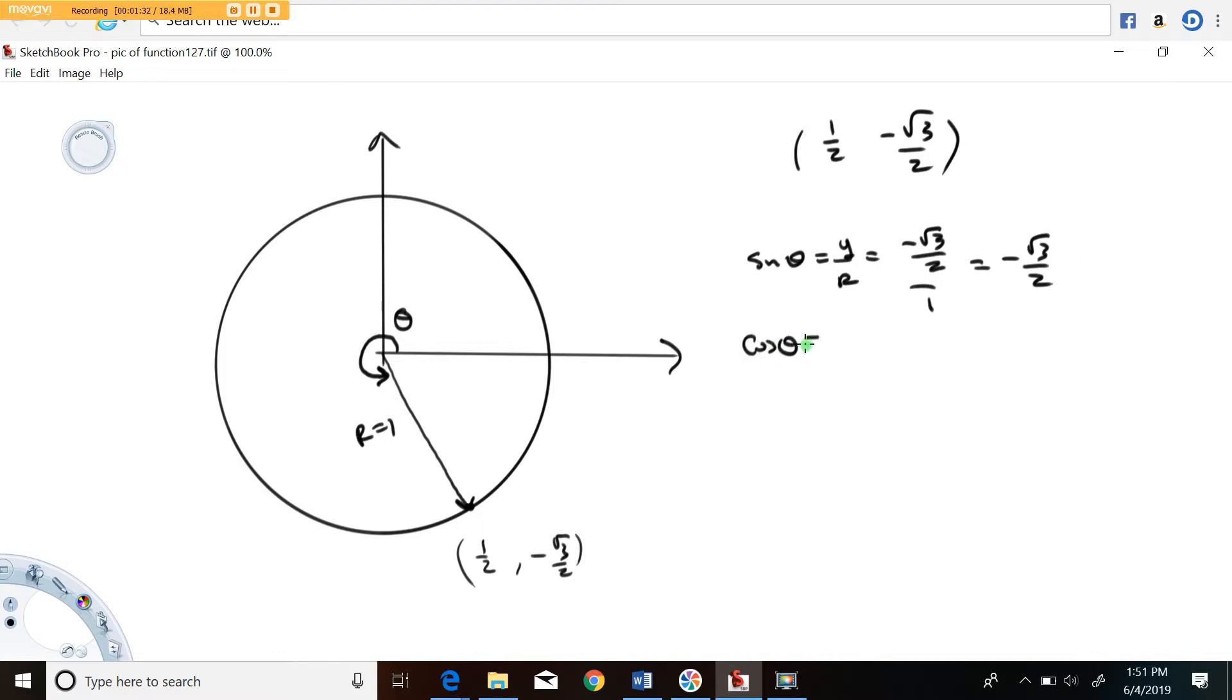Cosine theta is defined as x over r. The x value is here, one half. The radius is one. So that's just equal to one half.